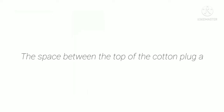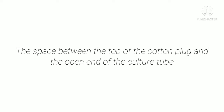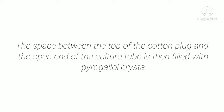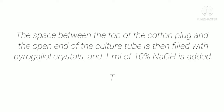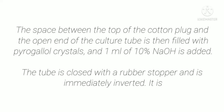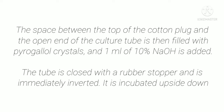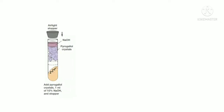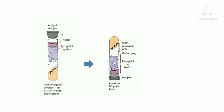The space between the top of the cotton plug and the open end of the culture tube is filled with pyrogalol crystals, and 1 ml of 10% NaOH is added. The tube is closed with a rubber stopper and immediately inverted. It is incubated upside down in order to avoid contact between the alkali and the bacteria. The tube is kept inverted during the incubation.